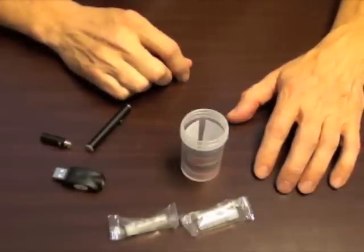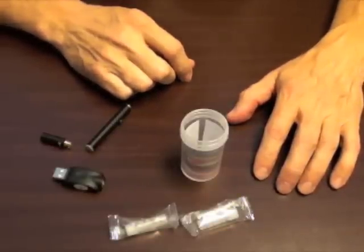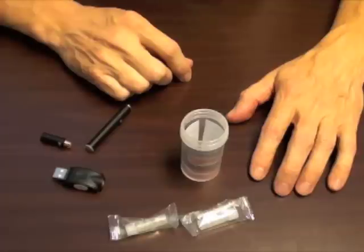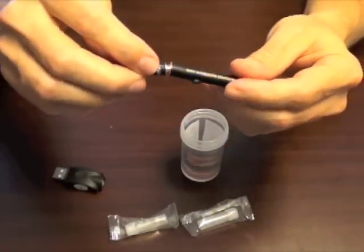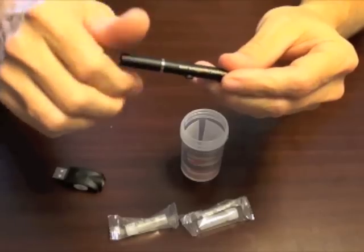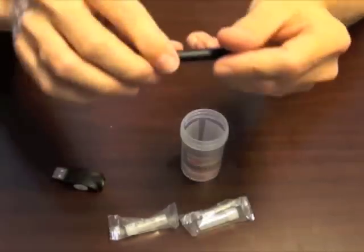Before we can vape, we have to fill a tank. So let's follow the instructions in the manual to get the tank filled. Step one is connect the atomizer to the battery. You just take the threaded end, screw it in. Does not have to be super tight. That's it.